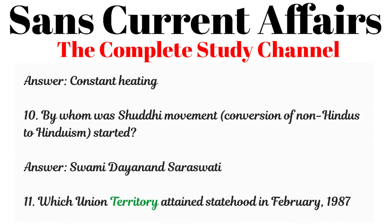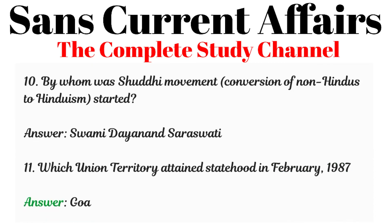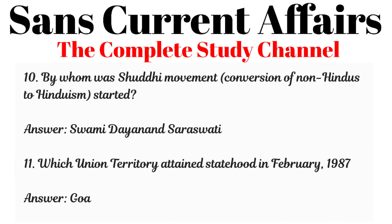Question 11: Which union territory attained statehood in February 1987? Answer: Goa.